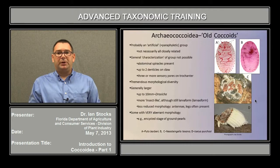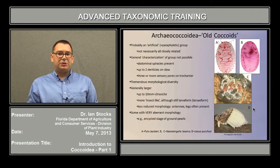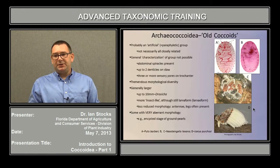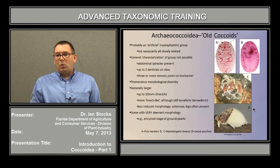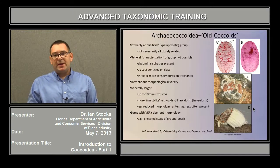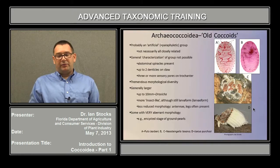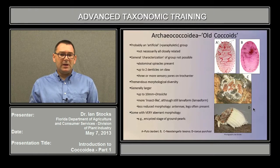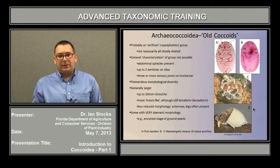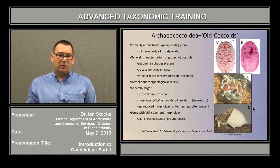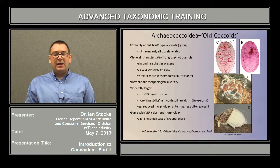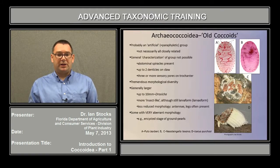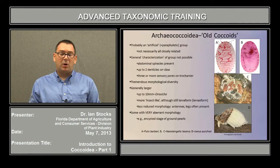The Archaeococcoidea is probably an artificial group — in technical language, we mean paraphyletic — meaning that not all of the included groups are necessarily closely related. A general characterization of the group is really not possible, but by and large, they will have abdominal spiracles present in addition to the one or two pairs on the thorax, and they may have up to two denticles on the claw. They will also have three or more sensory pores on each trochanter of the leg. There's a tremendous amount of morphological diversity within this group, though generally they can be larger — for instance, the genus Drosicha can be up to 10 millimeters long. They more or less retain an insect-like body, even though the adult females are still rather larva-formed, and their overall morphology is less reduced, meaning they generally still retain antennae and legs. But there are some with very aberrant morphology, such as the encysted stage of the group known as the Margarodids or the ground pearls.